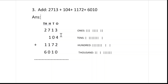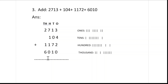For 1,172: 2 is ones, 7 is tens, 1 is hundreds, 1 is thousands. For 6,010: 0 is ones, 1 is tens, 0 is hundreds, 6 is thousands. We align each number by its place value before adding.